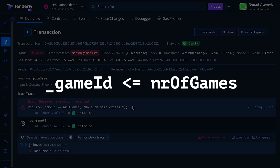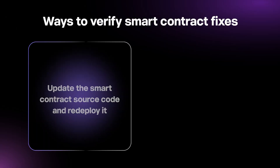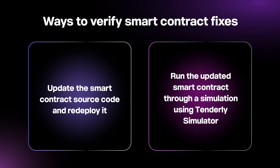Of course we need to verify that this fix will work as intended. We can do this in two ways: the slower way, which involves updating the code and redeploying the smart contract, or the faster way by running a simulation on the updated code to verify the fix.